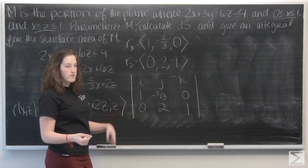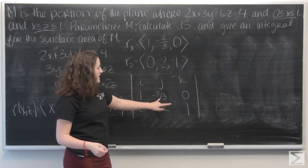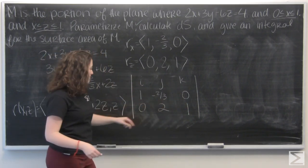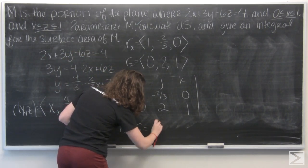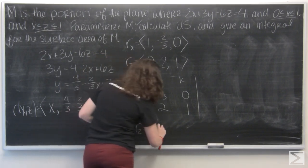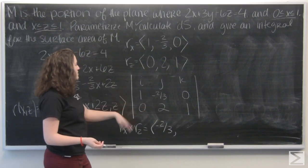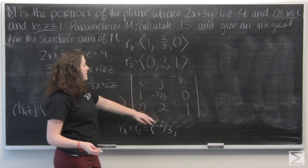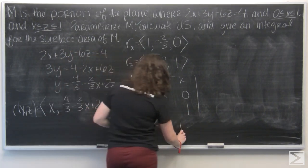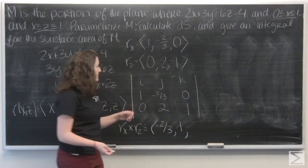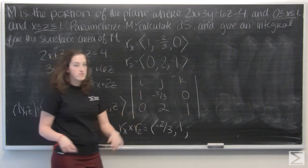So I'm going to do it like a cofactor expansion. So let's do i first. I'm looking at negative 2 thirds times 1 minus 0. So negative 2 thirds for i. Let's do j. So cut out the middle column. 1 times 1 minus 0. And let's do k. So cut out the third column. 1 times 2 minus 0, so 2.